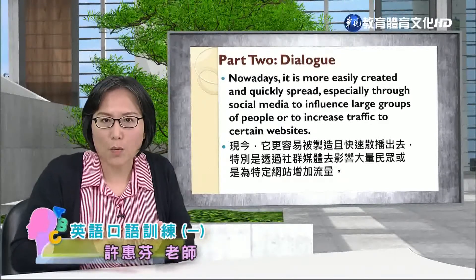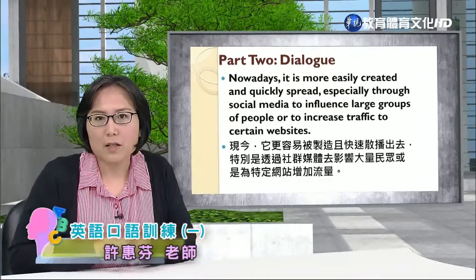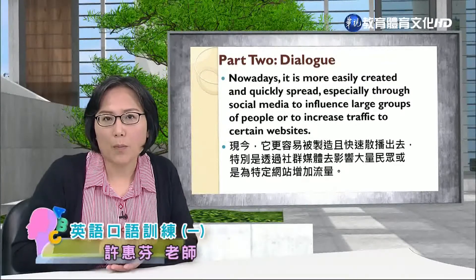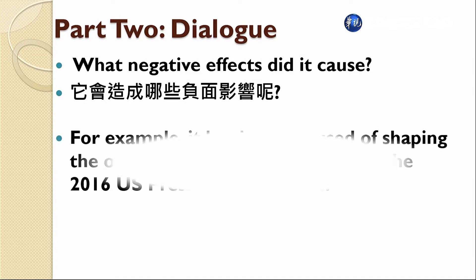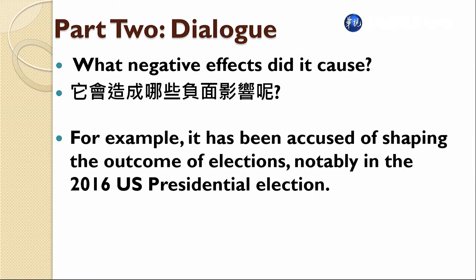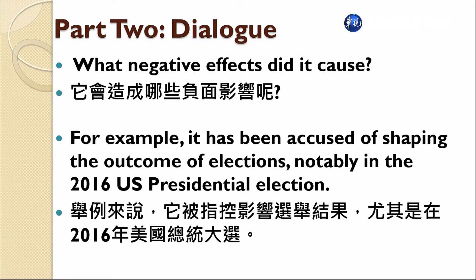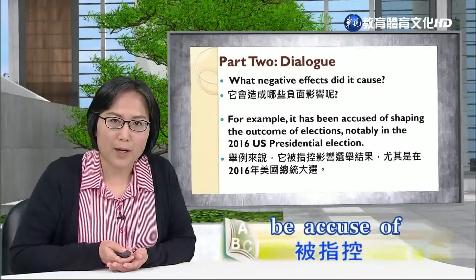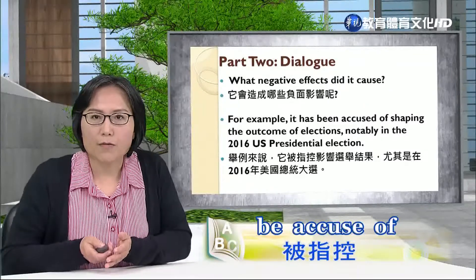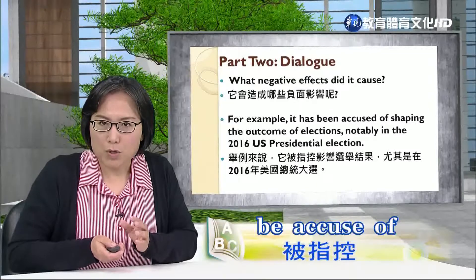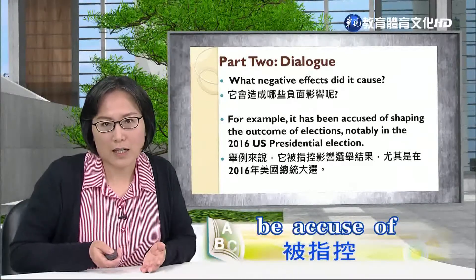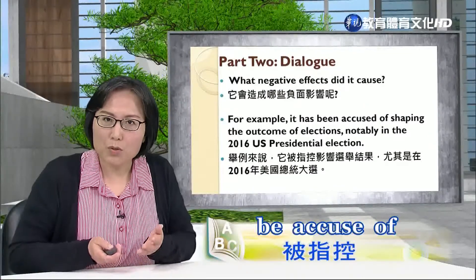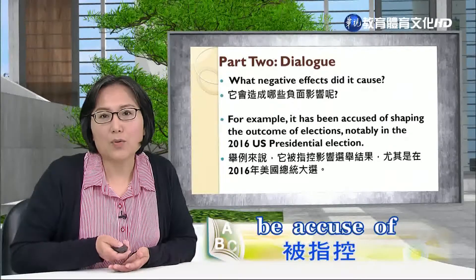简单来讲，它的目的就是想要让这个website来increase traffic，流量，让大家来点阅它. What negative effects did it cause? It has been accused of shaping the outcome of elections, notably in the 2016 US presidential election. 它被指控曾经影响选举结果，be accused of shaping the outcome，操控选举结果，在2016的美国总统大选.